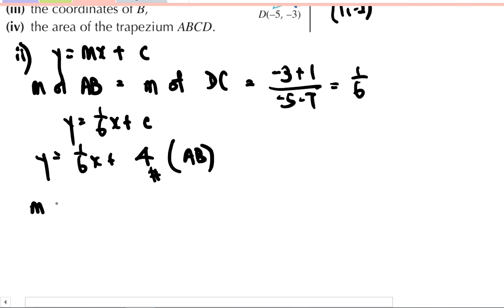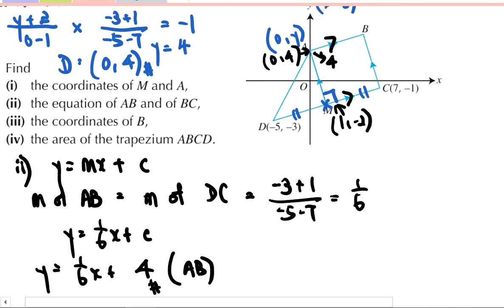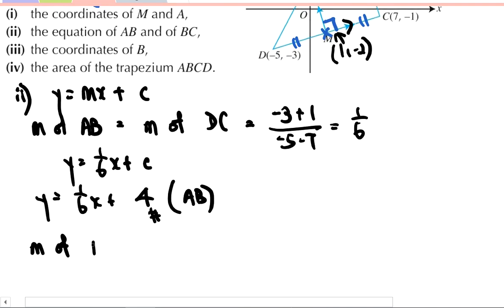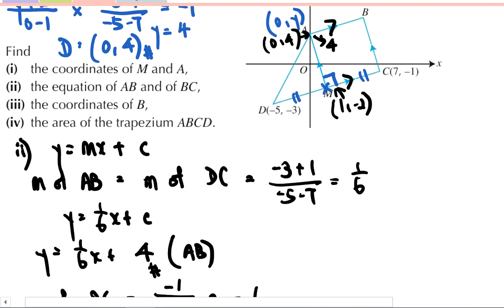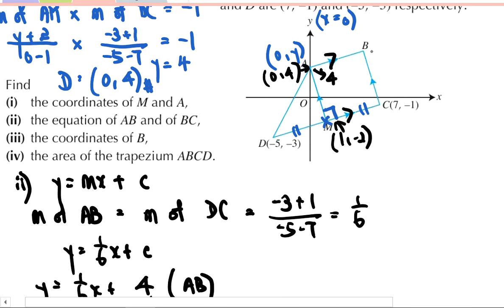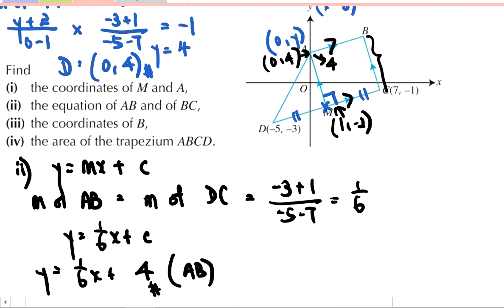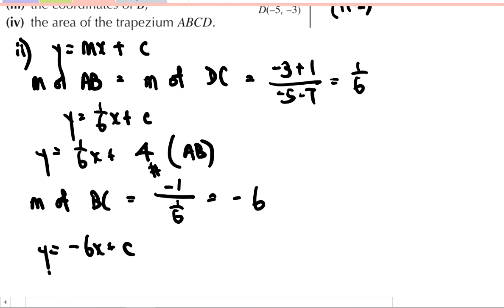I know the gradient of DC is 1 over 6, so if I want to find the gradient of BC now, using negative reciprocal, I get negative 6. So y is equal to -6x + c. I'm supposed to find the line BC—I have the gradient to be negative 6, I just have to substitute the point C inside now.